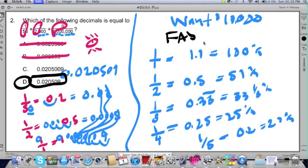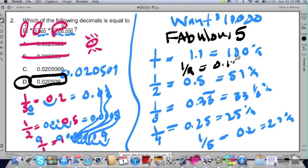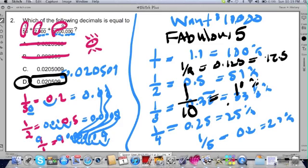Fabulous 5. There's also the Magnificent 7. If you're thinking about Magnificent 7 in terms of fractions, that would be one-eighth would be added to that list. One-eighth is equal to 0.125, or we could think of this as 12.5%. And the last one is 1 over 10, which comes up sometimes. And we think of that as 10%, or 0.1.